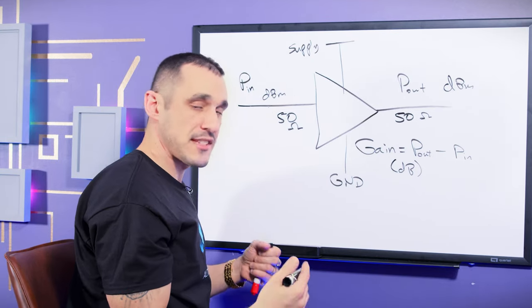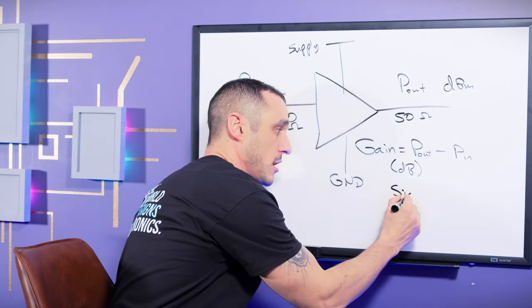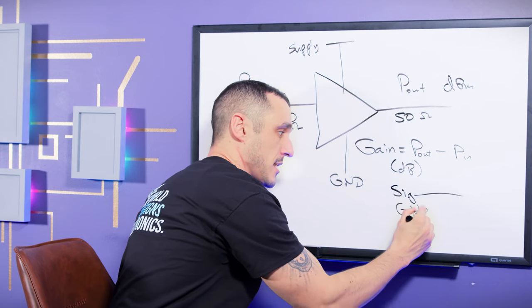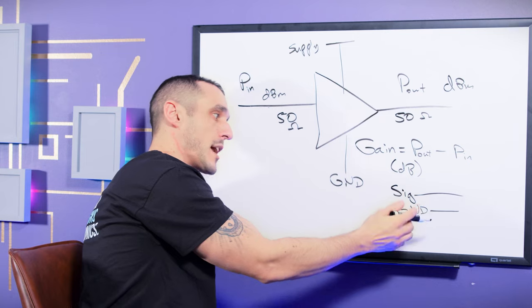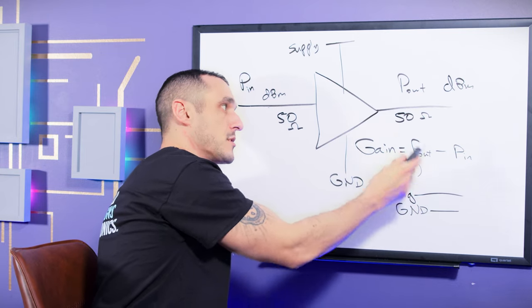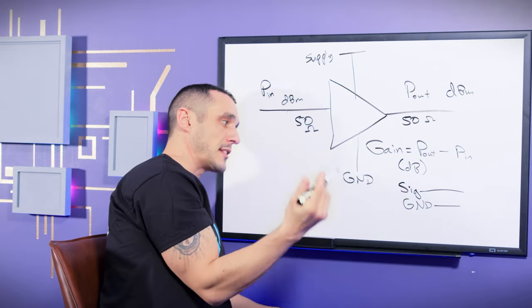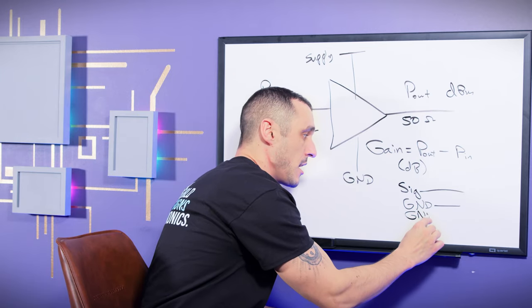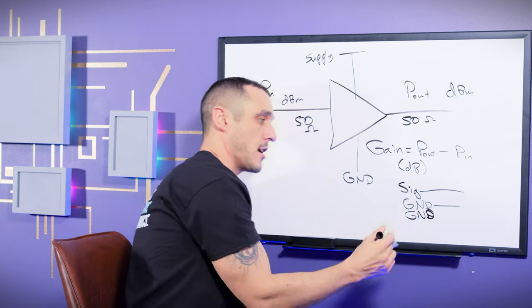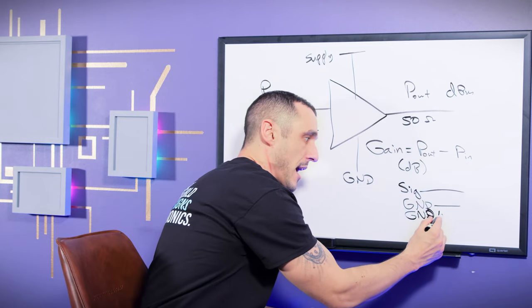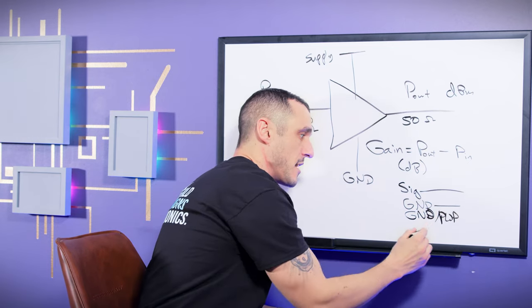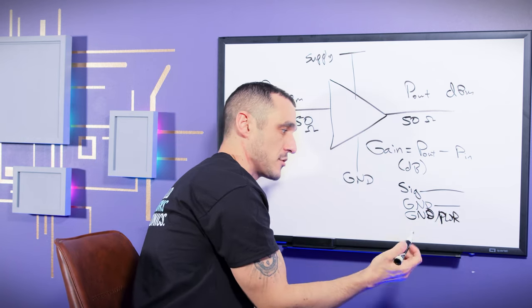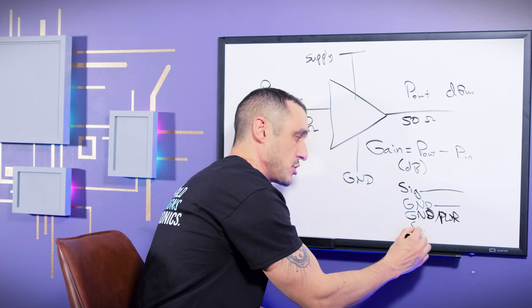Now, to have a stack up to do that, you would basically have signal on the top layer, and then you would want to have ground on the next layer. And of course, the reason to do that is so that we can set a consistent impedance for these input and output traces. I like to do this on a four-layer board, so that means I would have ground. And if it's just an RF system, this might be ground slash power.